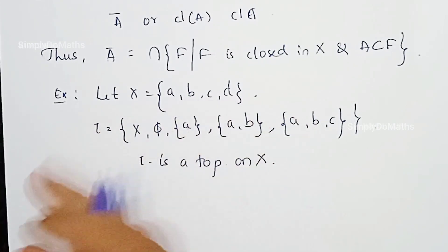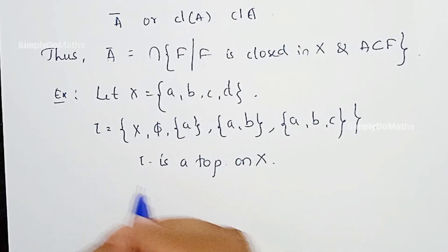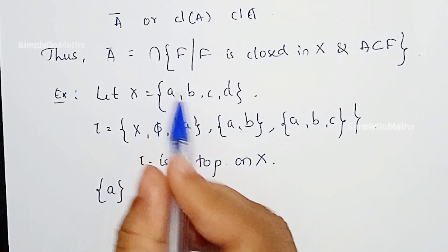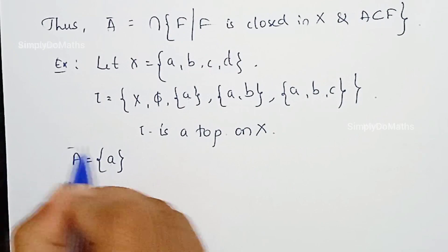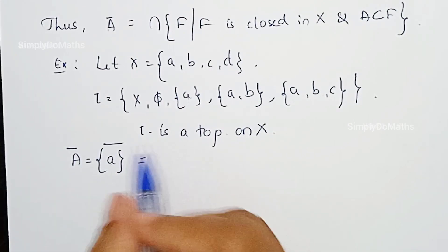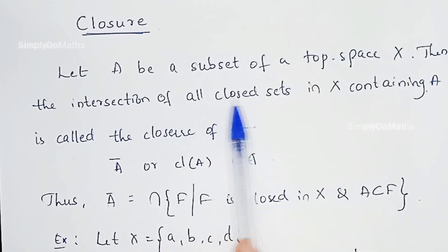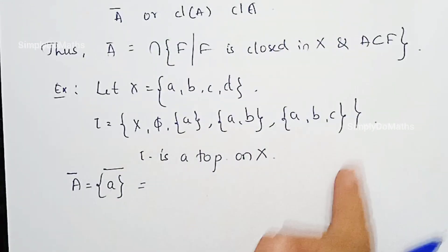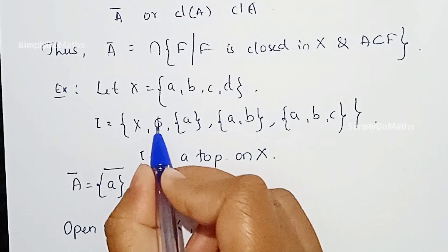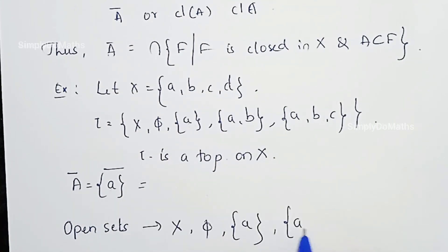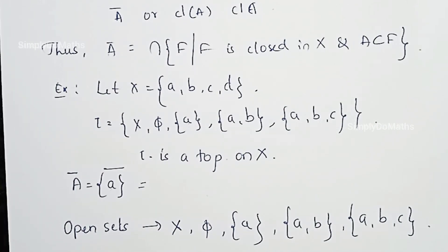Now let's find the closure of a subset of X. Let's consider the singleton set {A} as the subset. The closure is the intersection of all closed sets in X containing {A}. The open sets in τ are: X, empty, {A}, {A, B}, {A, B, C}. Taking complements gives the closed sets: empty, X, {B, C, D}, {C, D}, and {D}.